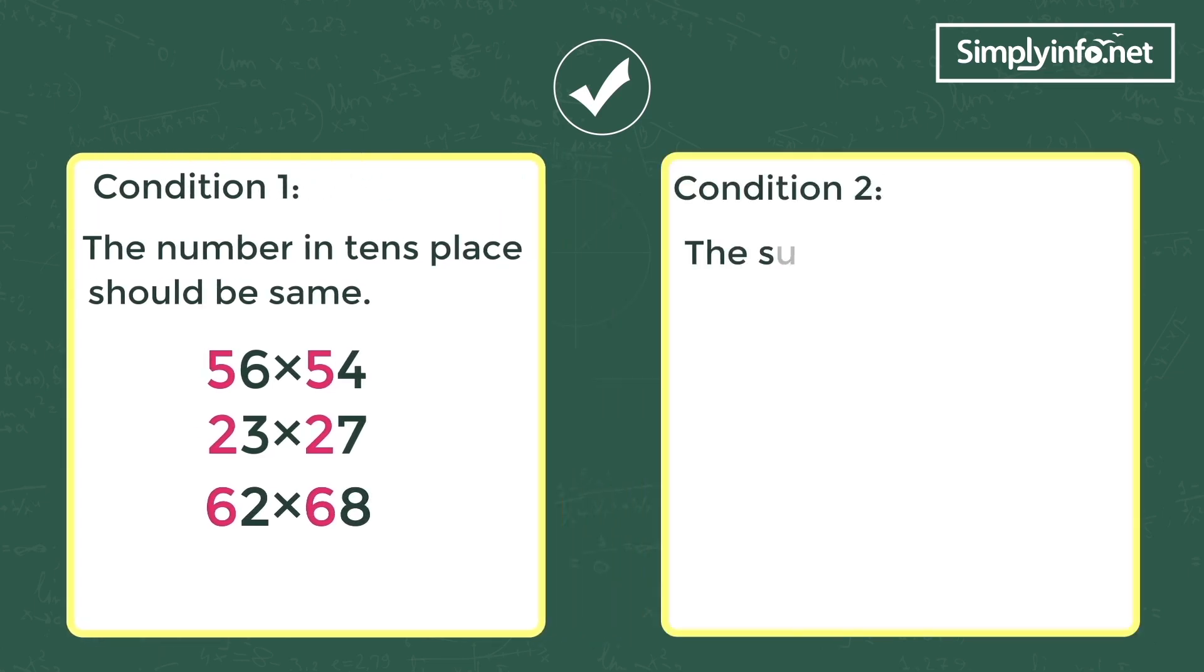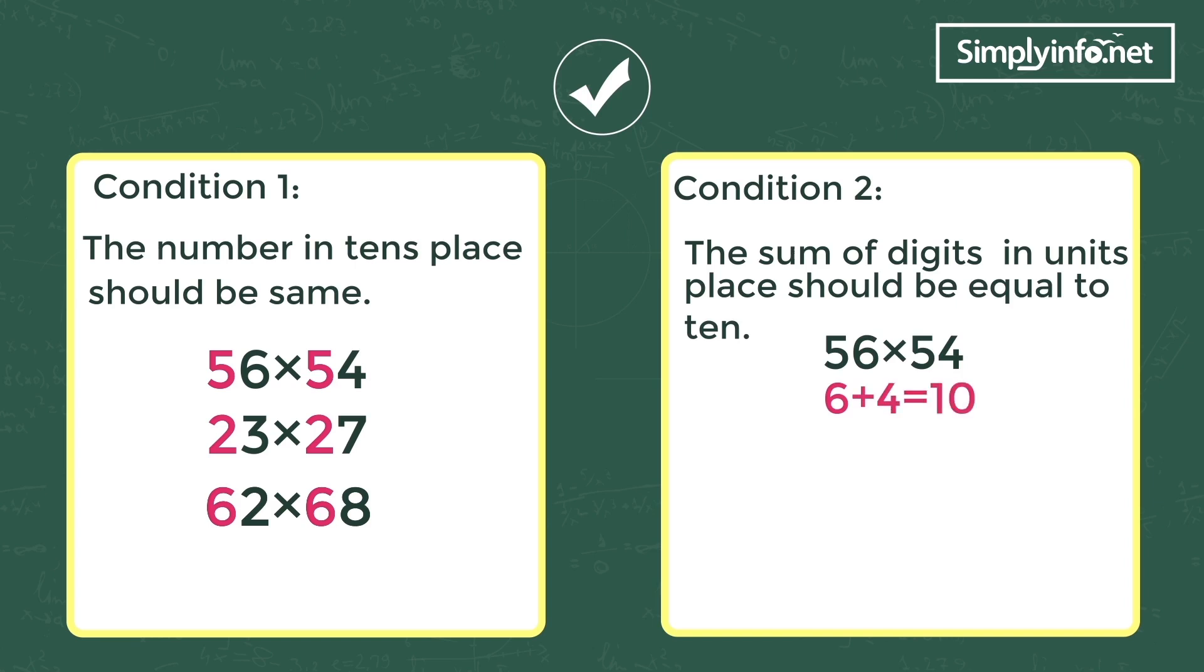Condition 2: The sum of digits in units place should be equal to 10. These are the examples for condition 2. First problem 6 plus 4 equals to 10, second problem 3 plus 7 equals to 10, third problem 2 plus 8 equals to 10.